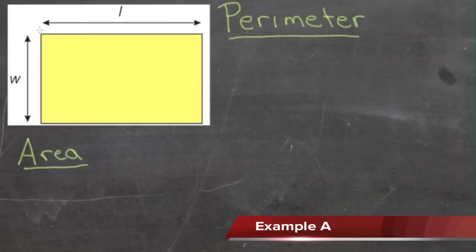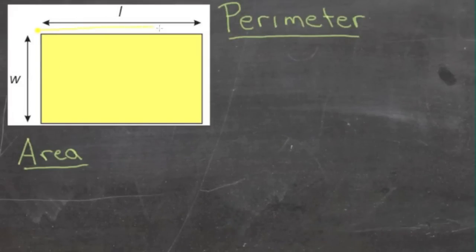To find the perimeter of a rectangle, we start in one corner and measure our way around the outside edges. Here, our measurements are given as L and W. If we start up here in the top left hand corner, first we have an L, then we turn the corner and have a W, turn the corner and get another L, and turn the corner and get another W again.